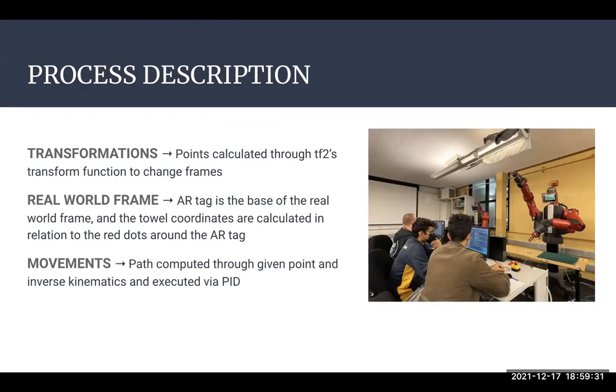Through this process, the points were calculated through TF2's transform function. This allowed us to change frames between that of the AR tag and the gripper and compute our inverse kinematics. The real-world frame was the AR tag itself, and towel coordinates were basically offsets from the location of the AR tag. And movements were computed with the inverse kinematics solver and executed via PIDs with the movement solver built into the Baxter.